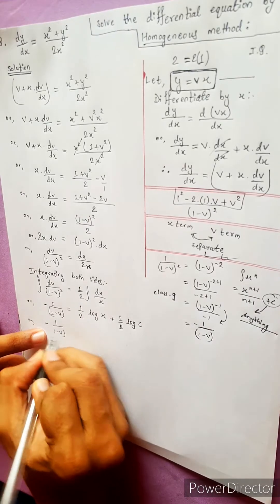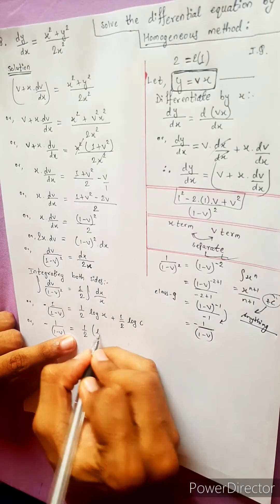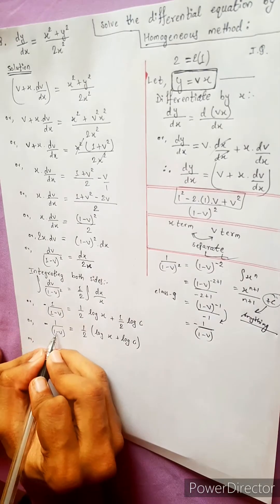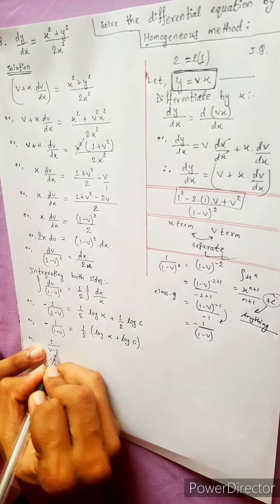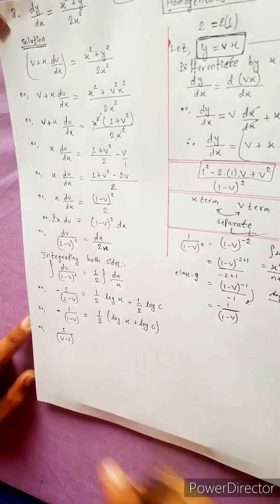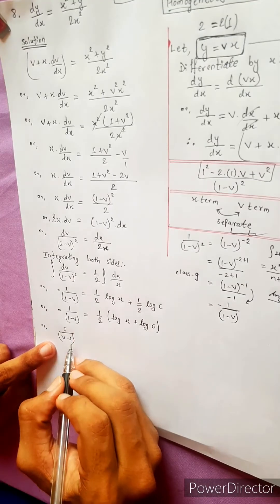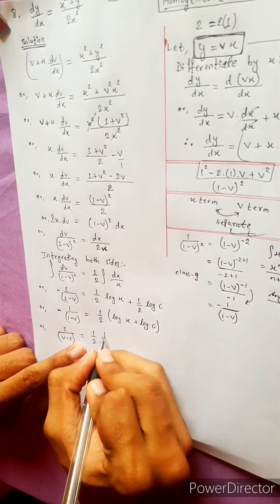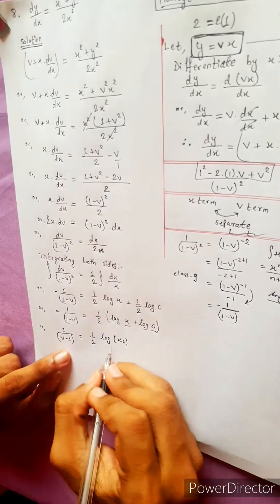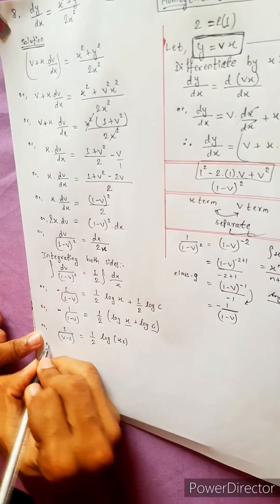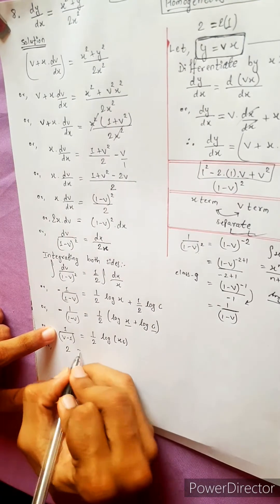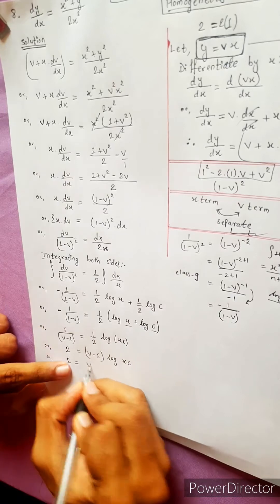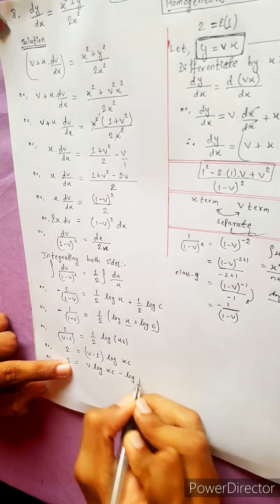So minus one divided by one minus v equals one half times log x plus log c. Using the log property log a plus log b equals log ab, the right side becomes one half log xc. Multiplying through: one divided by v minus one equals one half log xc.